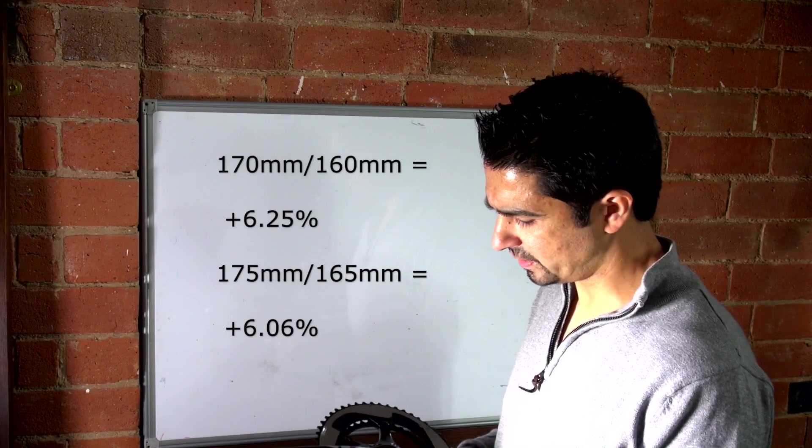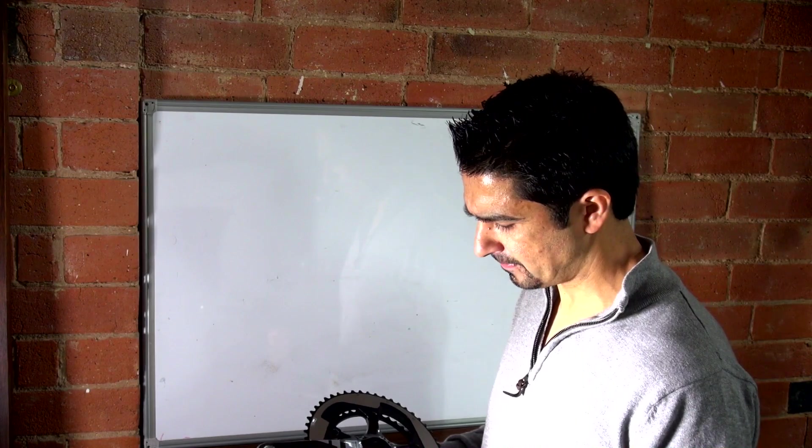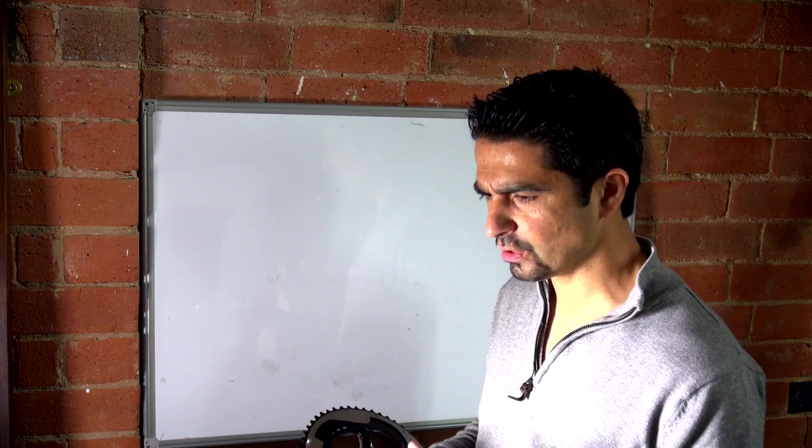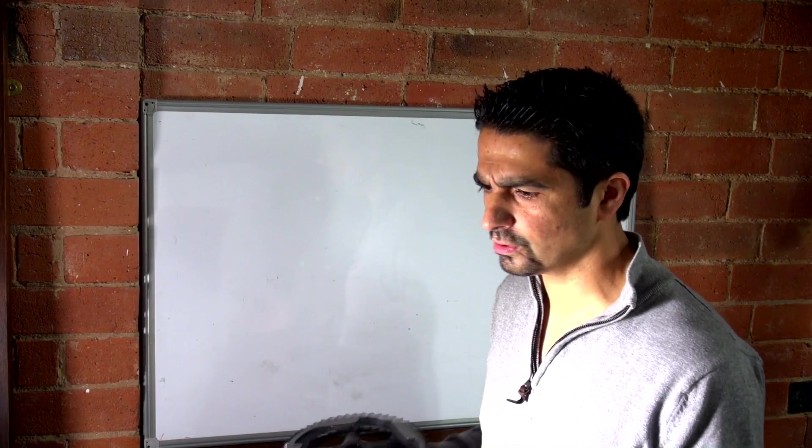A 6% difference is the equivalent of going from a 53 chainring here to a compact 50 chainring. So, all things being equal, the crank length will affect your gearing. In fact, arguably, you should gear your bike according to your crank length. In fact, of course, you should do that.